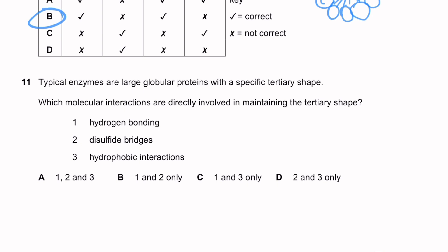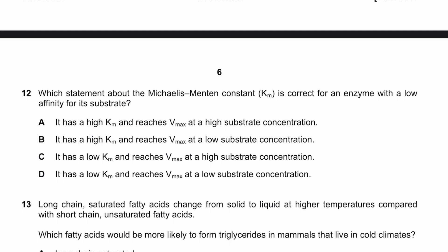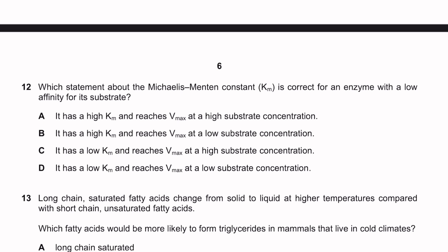Question eleven: typical enzymes are large globular proteins with a specific tertiary shape. Which molecular interactions directly maintain the tertiary shape? Hydrogen bonds, disulfide bridges, and hydrophobic interactions — all are directly involved (ionic bonds also play a role but weren't listed). Question twelve: which statement about the Michaelis-Menten constant (Km) is correct for an enzyme with low affinity for its substrate? Low affinity means a high Km value. The higher the Km, the lower the affinity; the lower the Km, the higher the affinity.